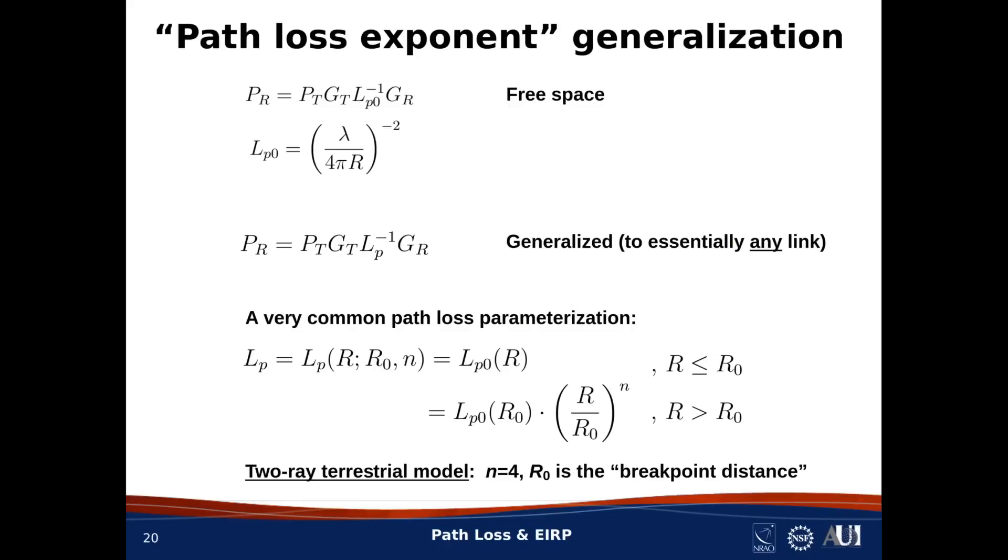What I'm showing now is a very common generalization of the path loss. In this scheme, we define a breakpoint distance, which we call R sub 0. Now, if the range R is less than the breakpoint distance, R sub 0, then we say the path loss is equal to the free space path loss. Nothing's different. But if R is greater than R sub 0, then we say that the path loss is equal to the free space path loss at R0, and that the additional loss is merely the spreading loss, which is R divided by R0, quantity to the power N.